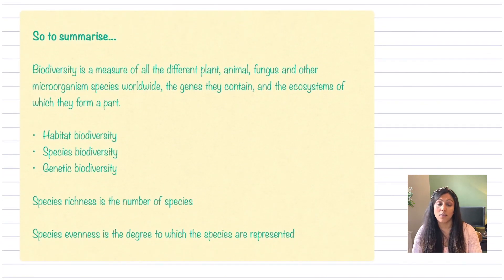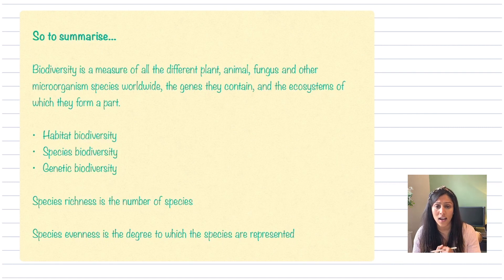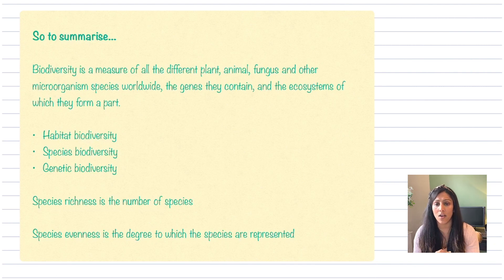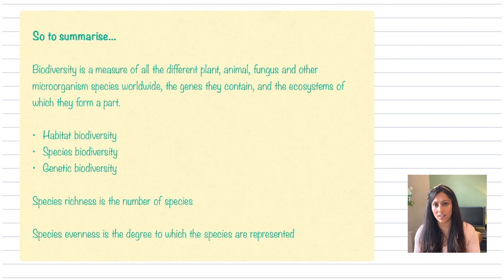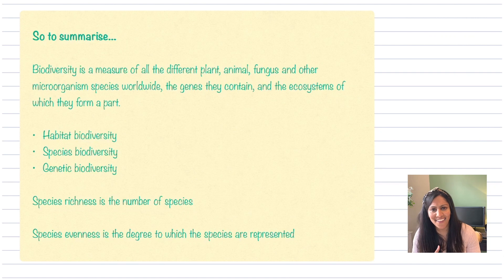So to summarise the introduction of biodiversity, it's the measure of all the different plants, animals, fungi, microorganisms, and species that exist worldwide — also the genes they contain and the ecosystems of which they form a part. That can be categorised into habitat, species, or genetic biodiversity. When looking at species specifically, we consider species richness, which is the number of organisms, and species evenness, which is how well they're distributed — those factors allow us to really see how biodiverse an area is. I hope that made sense, and I will see you soon. Bye.